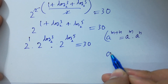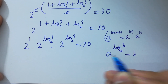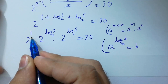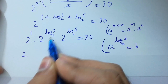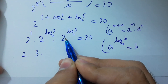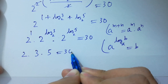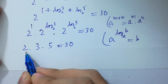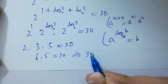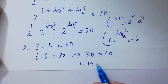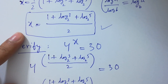Since a to the power log b to the base a equals b, we have: 2 to the power 1 equals 2, 2 to the power log 3 to the base 2 equals 3, and 2 to the power log 5 to the base 2 equals 5. So 2 times 3 times 5 equals 30, which equals 30. Left hand side equals right hand side, which shows that the value of x satisfies the equation.